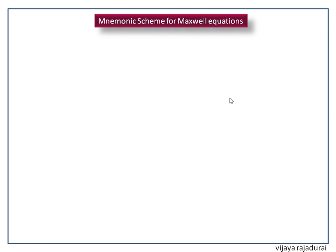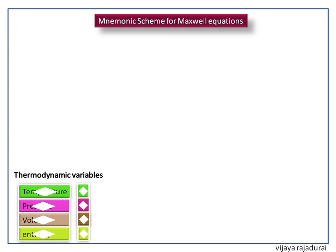Now we discuss Maxwell equations. Here we are going to see how the mnemonic scheme is used to recall the Maxwell equations. For this we need only 4 thermodynamic state variables such as temperature, pressure, volume and entropy. It should be in TPSV order. For that we should remember TAPASV. First, draw a square.